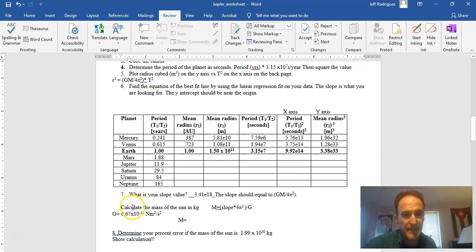So if I rearrange that, GM divided by 4 pi squared for M, you get this. So you've got 3.41 E to the 18th times 4 times pi squared divided by 6.67 E to the negative 11 equals. When I do that, I get 2.02 E to the 30th kilograms. We're going to kind of wave our hands here for units. But you have to make sure that you use seconds for period, meters for radius. You've got to. Otherwise, this is going to be a crazy unit.